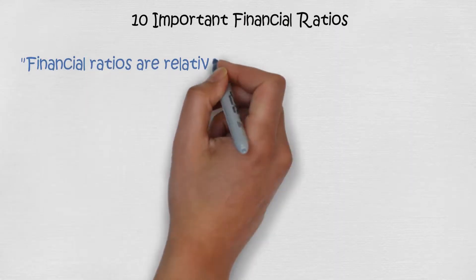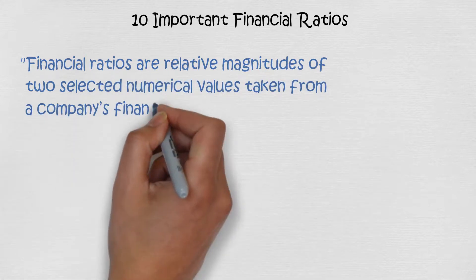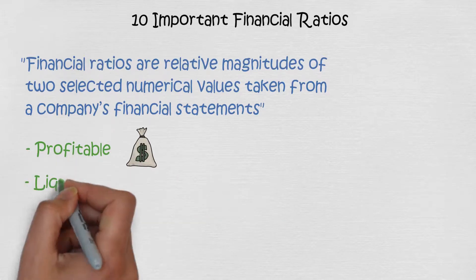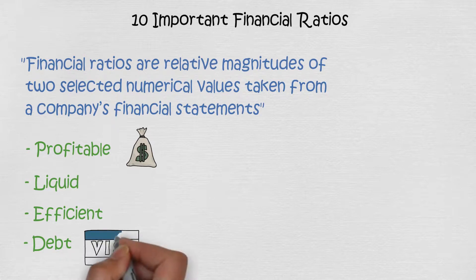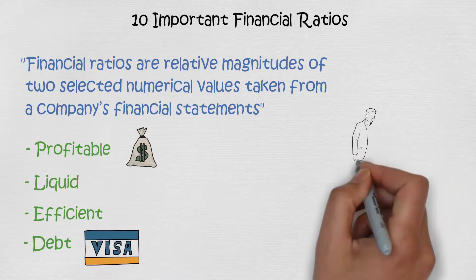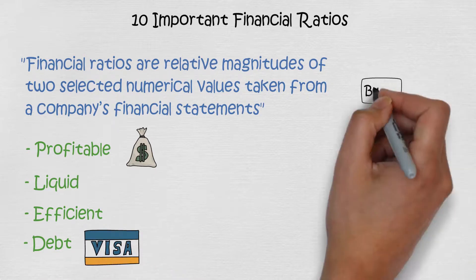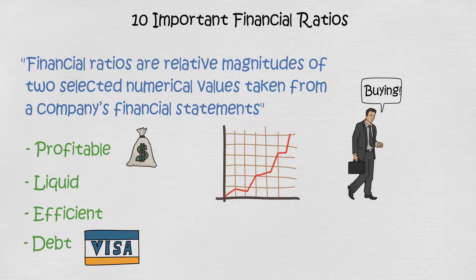Financial ratios are relative magnitudes of two selected numerical values taken from a company's financial statements. They show us information like how profitable, liquid, efficient, and how much debt the company is using as leverage. All this information helps you to know if the stock is worth buying and if the share price is correctly valued.